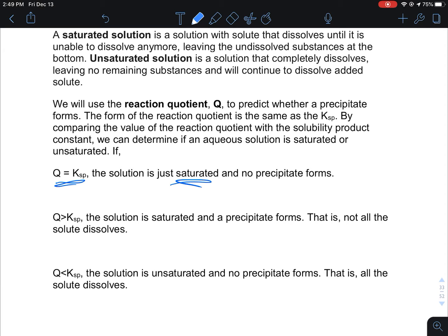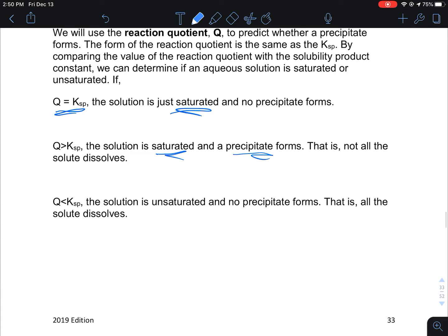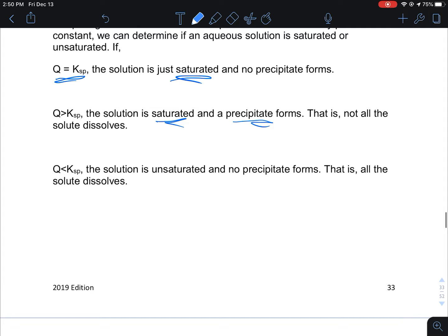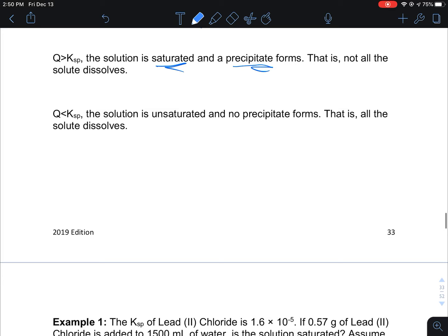If Q equals Ksp, the solution is just saturated and no precipitate forms. If Q is greater than Ksp, the solution is saturated and a precipitate forms. If Q is less than Ksp, then it's unsaturated and adding extra solute will not form any precipitation.